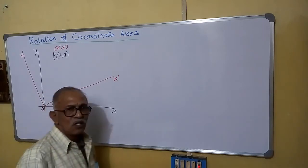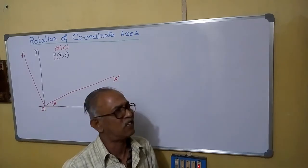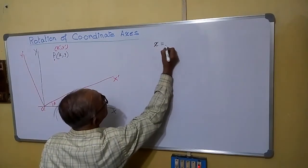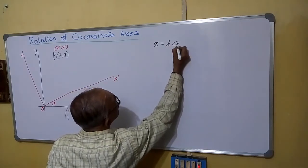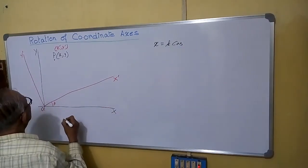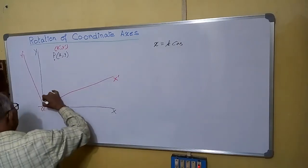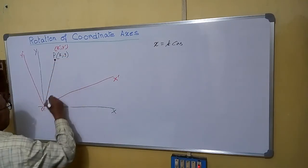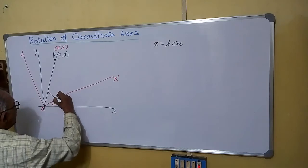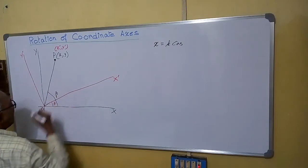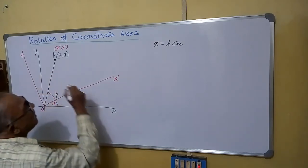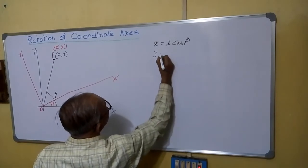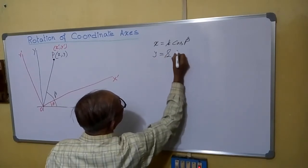You are knowing polar coordinates; I will use that system. You are knowing that x equals r cos(beta) and y equals r sin(beta). Here let us assume originally this is our point P and this angle was beta.